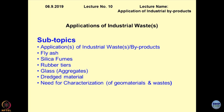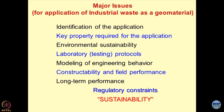How to decide whether a certain industrial byproduct is useful for a certain application or not — this is based on a series of tests. From next lecture onwards, I will be discussing in detail the ways of characterizing the materials, geomaterials. These materials could be manmade or naturally occurring. The characterization schemes remain the same, and from this point onwards, the idea is to create value addition to the geomaterials.